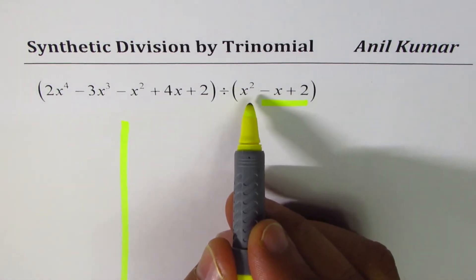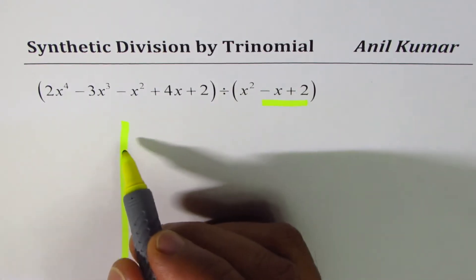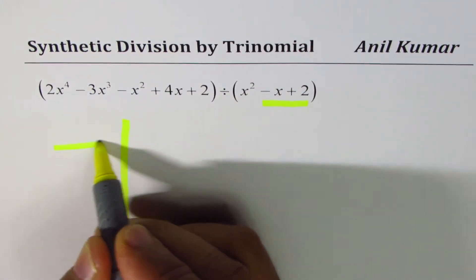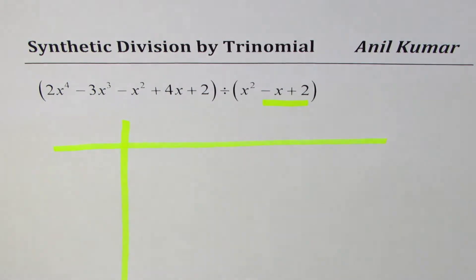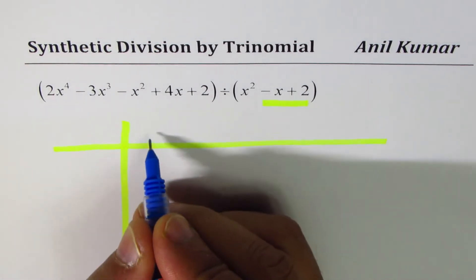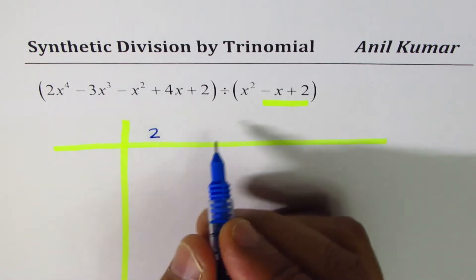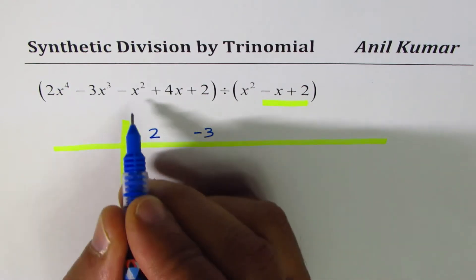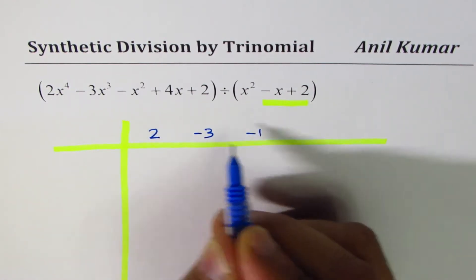We'll begin with the same concept. Draw a horizontal and vertical line for synthetic division. Write down all the coefficients. In our case, the coefficients for this quartic equation are 2, minus 3, minus 1, 4, and 2.